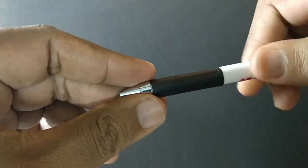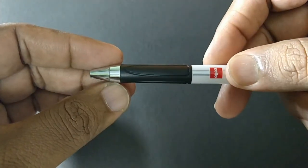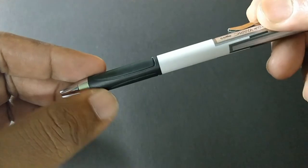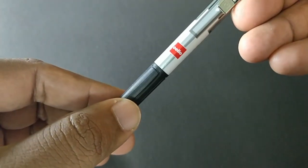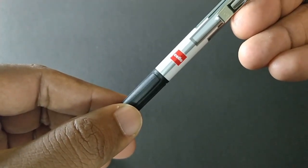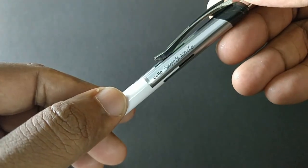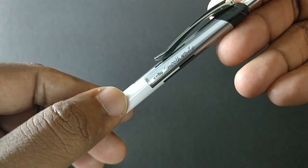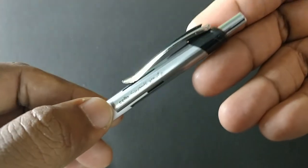The design of the pen with white and silver looks nice. There's Cello branding. Cello Smooth Write is written here.